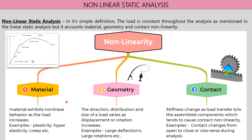Creep also comes under material non-linearity. For geometric non-linearity, the direction, distribution, and size of the load vary with respect to displacement or rotation. For example, a fishing rod that is largely deformed while fishing — this changing geometry is considered geometric non-linearity. Large deflection and large rotation problems fall under this category.